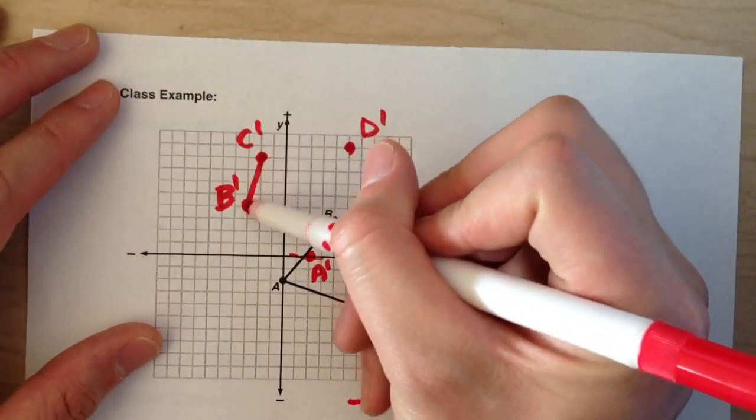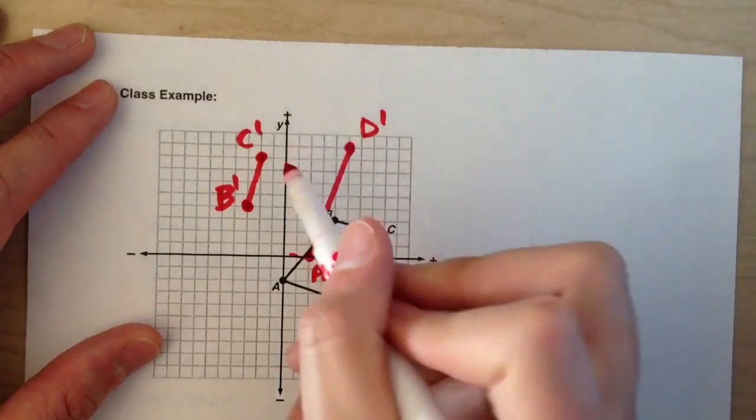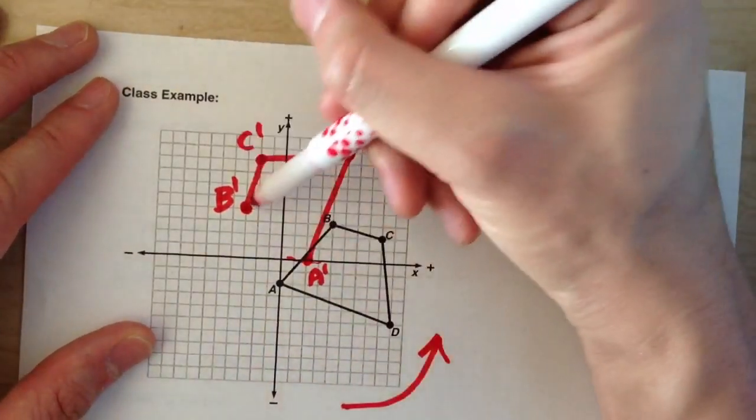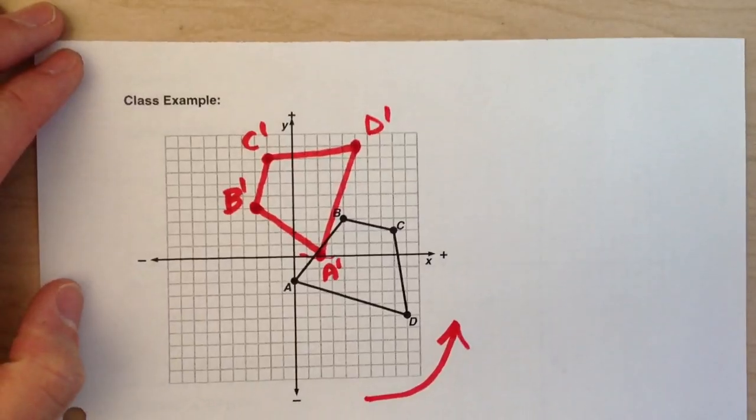If I connect my dots, that gives me my rotated trapezoid.